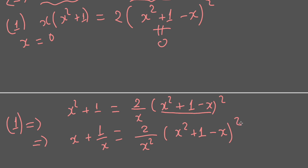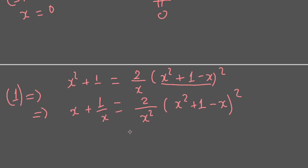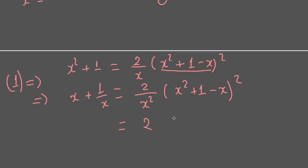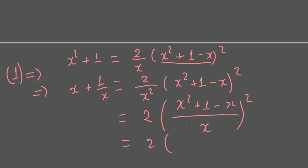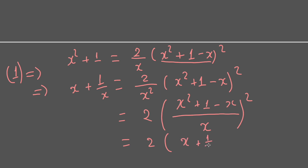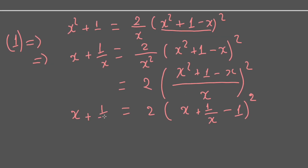On the right side, moving x² into the denominator expression, we simplify further. After dividing through, we have x + 1/x minus 1, all squared, on the right side. We can now see that the same expression appears on both sides of the equation.